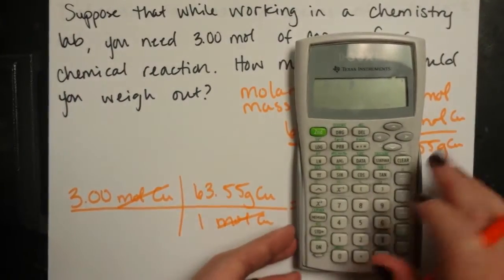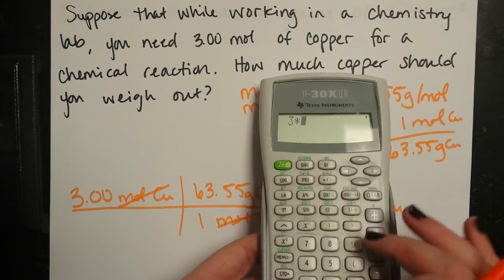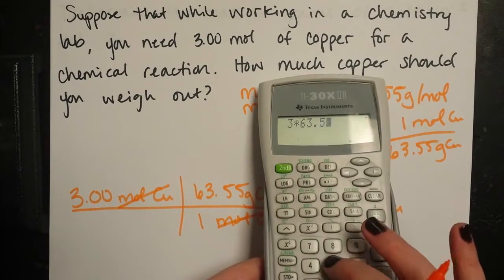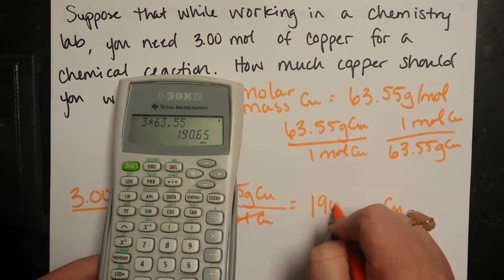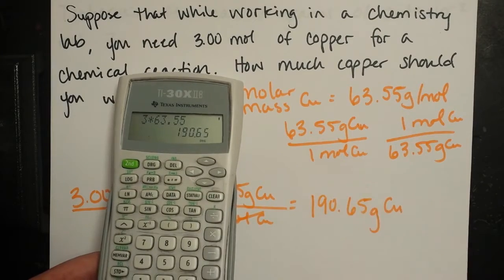You can just plug it in your calculator now. So you've got three times 63.55. So 190.65 grams of copper.